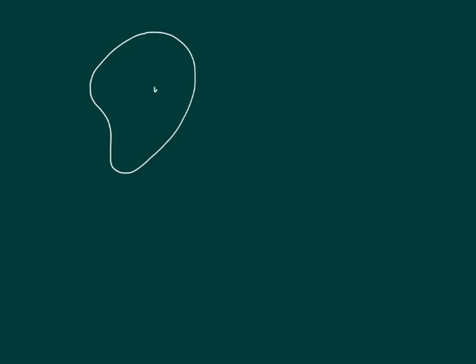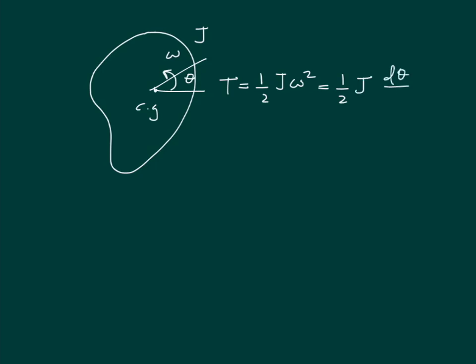Now consider the same rigid body, but instead of moving from one point to another, the body is only rotating around its center of gravity with angular velocity omega. Because the body has second mass moment of inertia J, the kinetic energy is defined by half J omega squared. If we know the angular displacement theta, the kinetic energy is half J times d-theta-over-dt squared, or half J theta-dot squared.